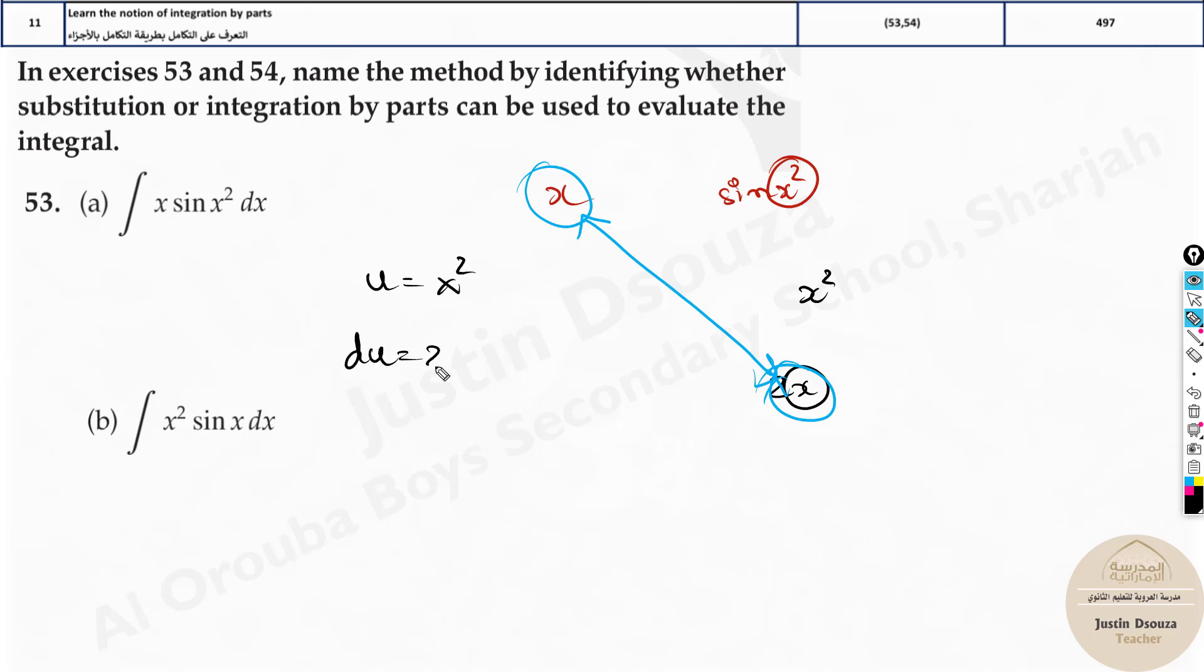So what is du? Du is 2x. Du by dx will be 2x. Now what is dx? It is du by 2x. That is dx. Now you substitute over here. You substitute this x value as it is and sin instead of x squared you put u and dx will be du by 2x.